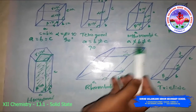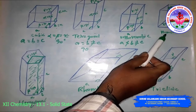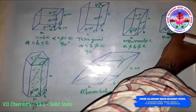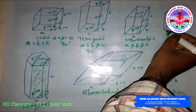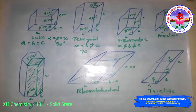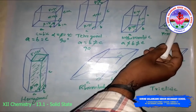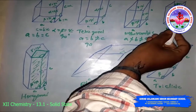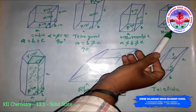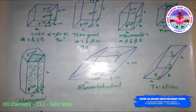The monoclinic crystal system has two possible variations: primitive and end-centered. Edge lengths are all different: A ≠ B ≠ C. Alpha and gamma are 90°, but beta is not equal to 90°. Examples include monoclinic sulfur and sodium sulfate decahydrate.